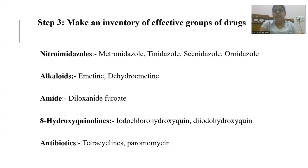The inventory of drug groups includes: nitroimidazoles such as metronidazole, tinidazole, secnidazole, and ornidazole; alkaloids like emetine and dihydroemetine; amides like diloxanide furoate; 8-hydroxyquinolines like iodochlorhydroxyquin; and antibiotics like tetracycline and paromomycin. These are the drug groups used in the treatment of acute amoebic dysentery.